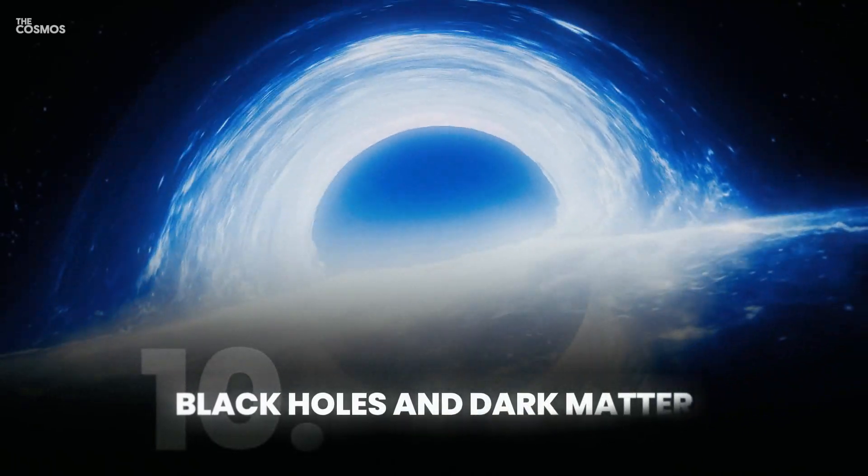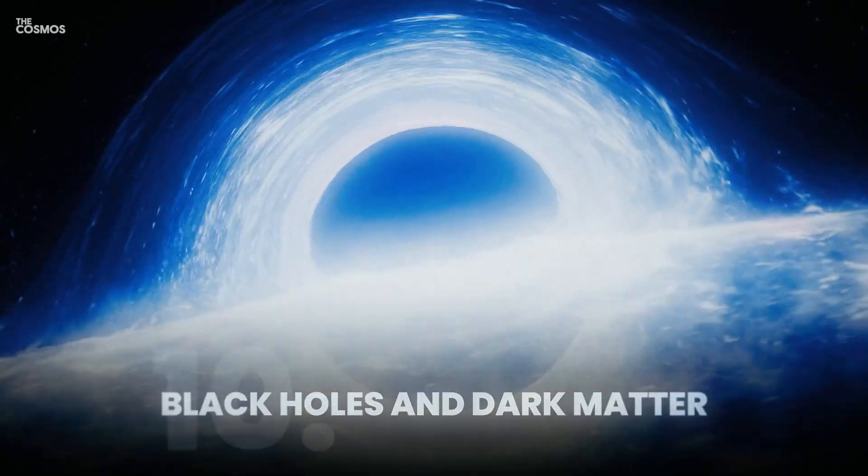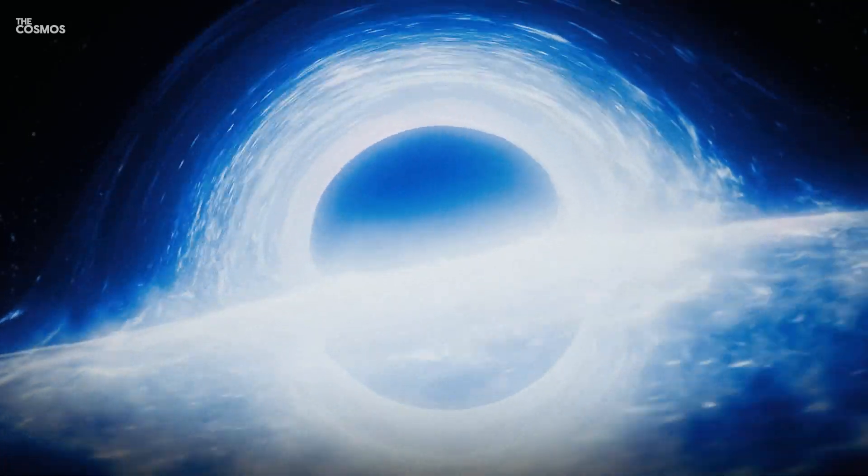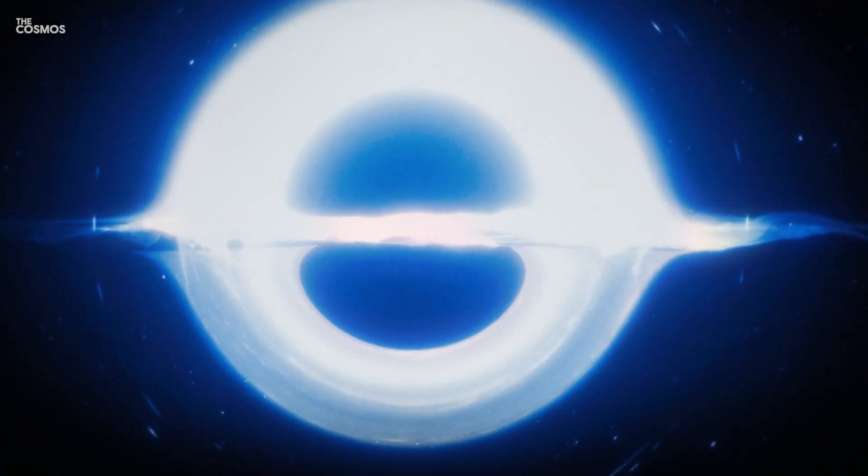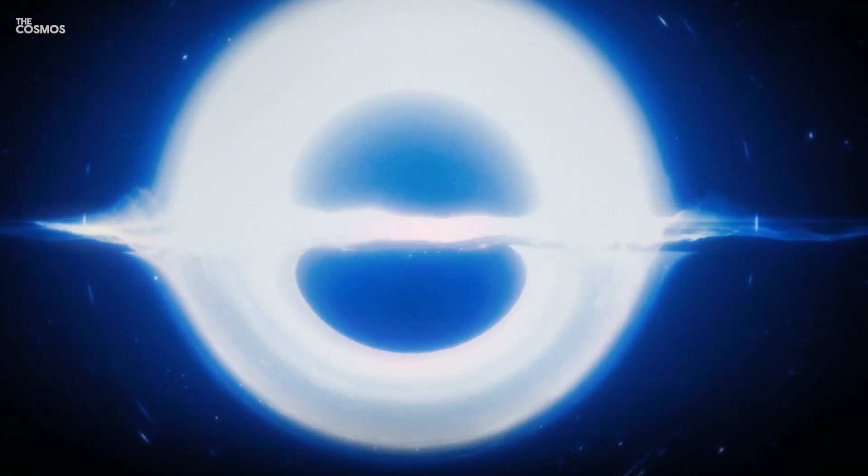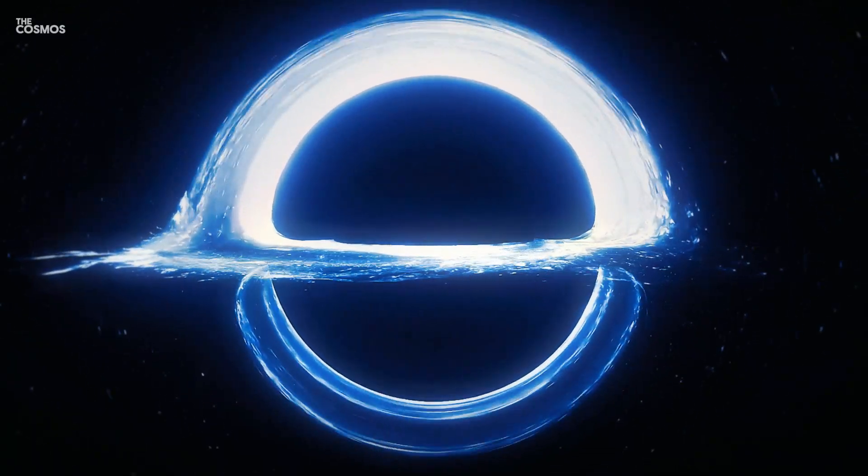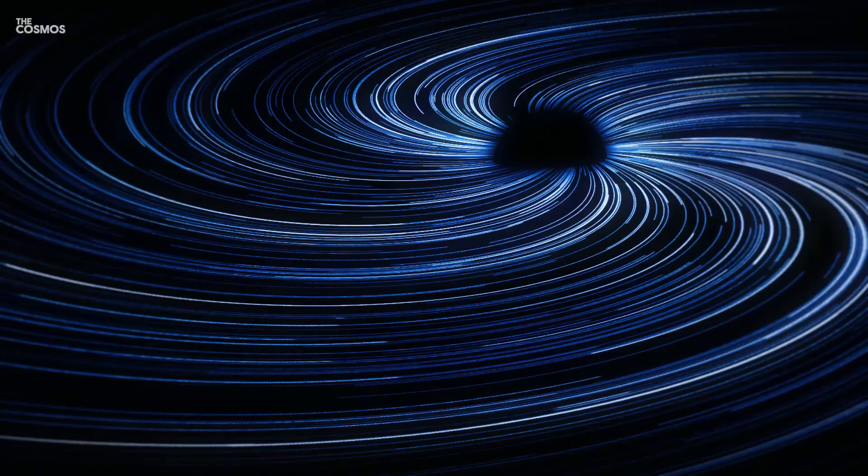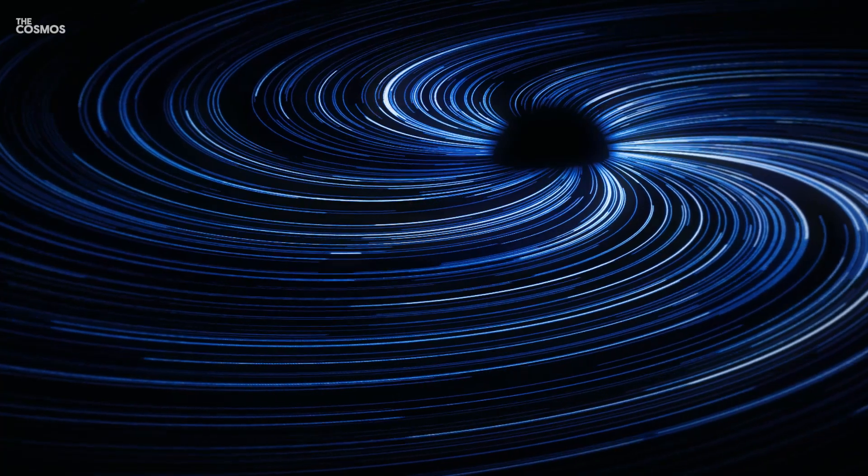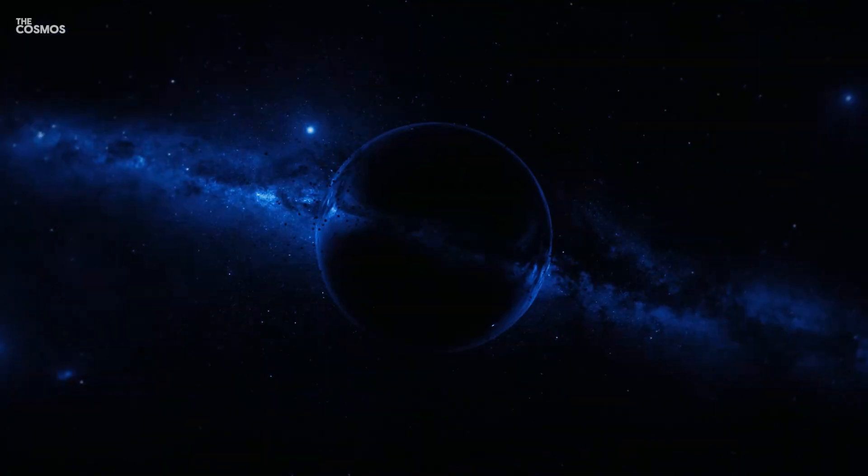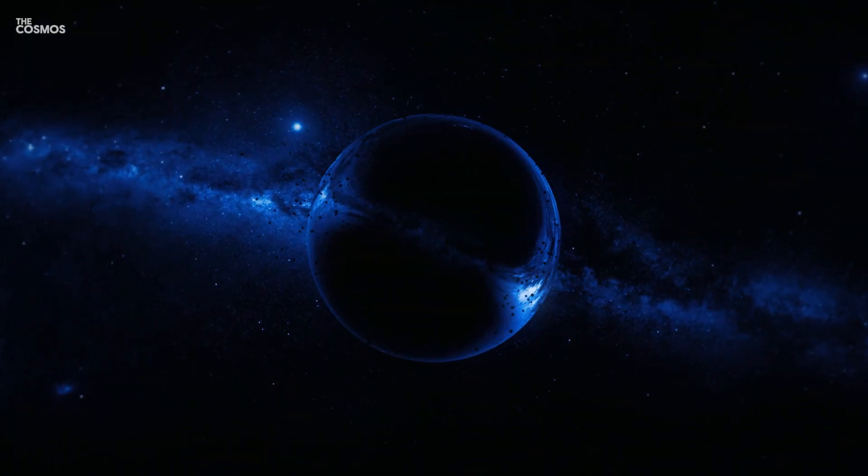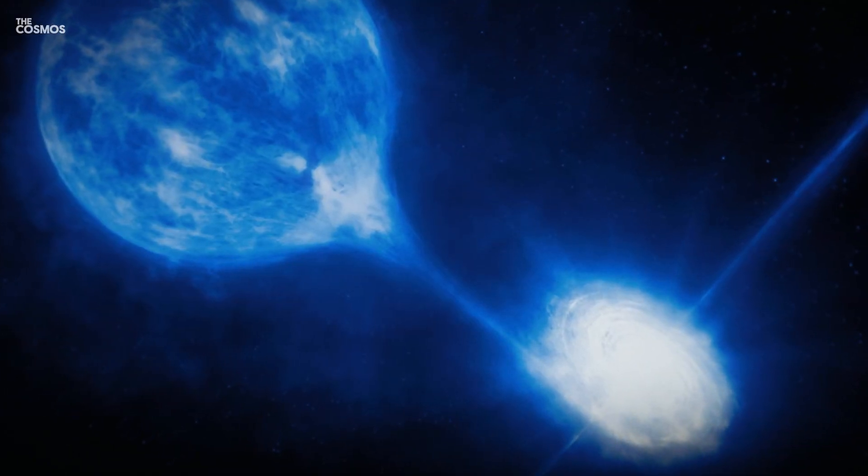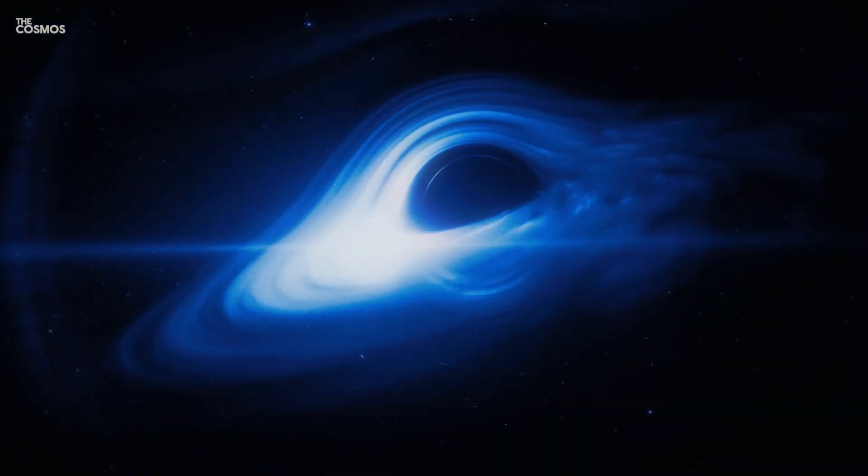Black holes and dark matter. Some theories propose that black holes could be linked to dark matter, the mysterious substance that makes up about 27% of the universe's mass-energy content. One idea is that dark matter could consist of primordial black holes formed in the early universe. While this theory is still highly speculative, it highlights the deep connections between black holes and the fundamental structure of the cosmos.